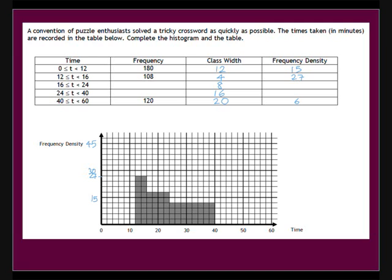Now we can work out the frequency densities of the two other bars by reading off the y-axis. These are 18 and 12. We can then use these values to find the frequencies by multiplying the frequency densities by the class width as shown.